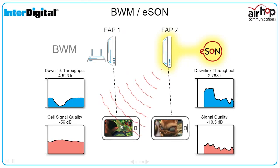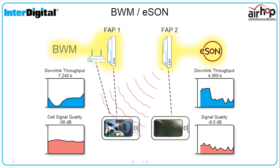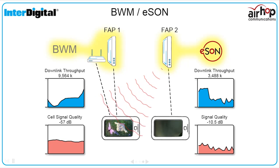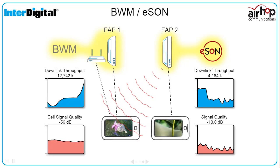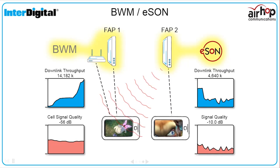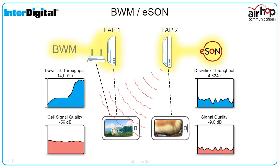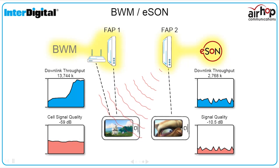Our bandwidth management technology adds an FTP download over Wi-Fi to UE1, increasing UE1's throughput to 14 megabits per second.